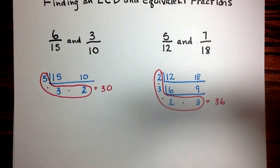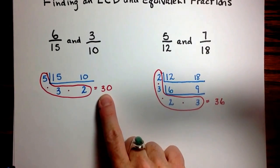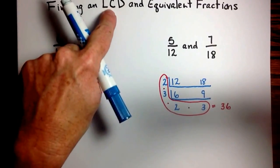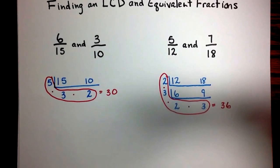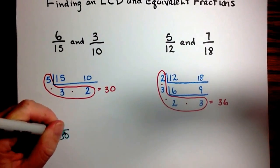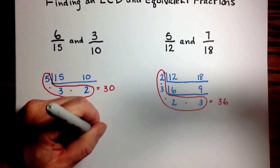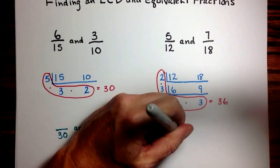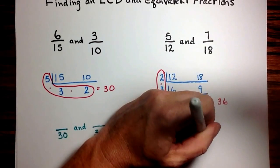So to use that information to create equivalent fractions, what this means is that our new denominator of our new fraction, in order to have a common denominator, we need to take both of these fractions and convert them into fractions that have a denominator of 30. And we need to take both of these fractions and convert them into fractions that have a denominator of 36.